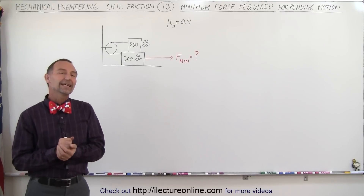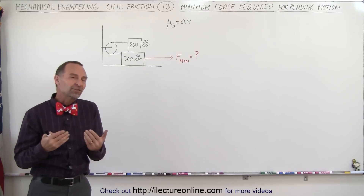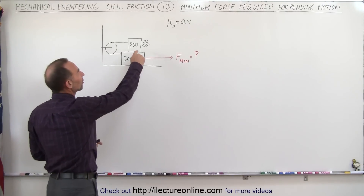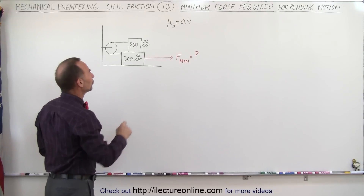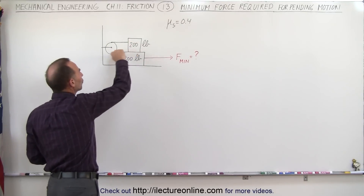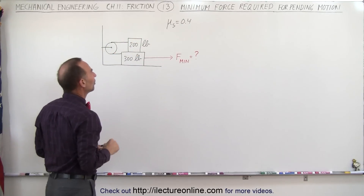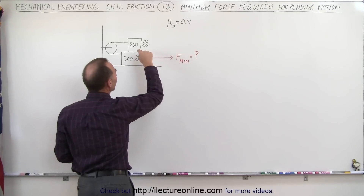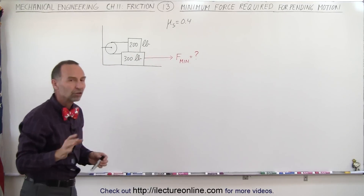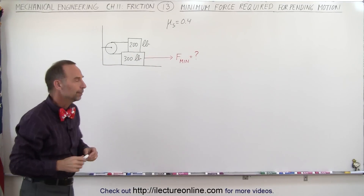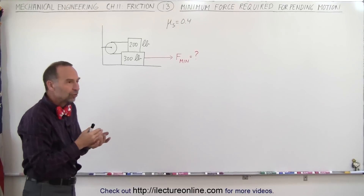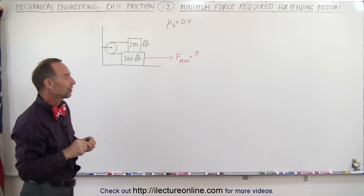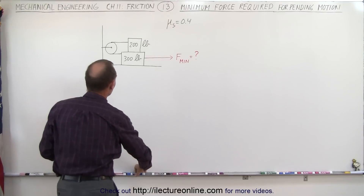Welcome to Electronline. Here we have a similar example as the problem we did before, with the difference that the top block can now also move. Notice that the two blocks are connected through a pulley system, and so the minimum force required now is required to make both blocks move, not just the one at the bottom. It turns out that to move the one at the bottom will take the exact same amount of force as in the previous example, and you'll see in just a moment why.